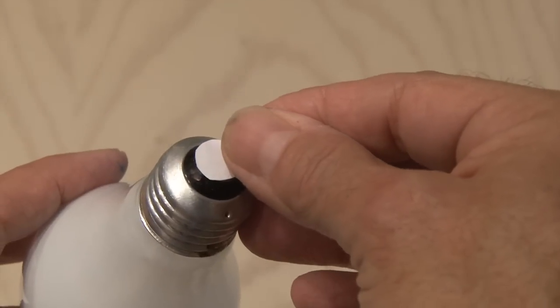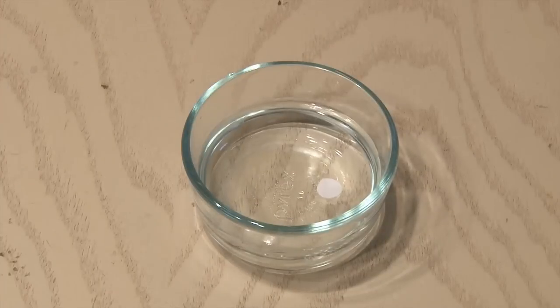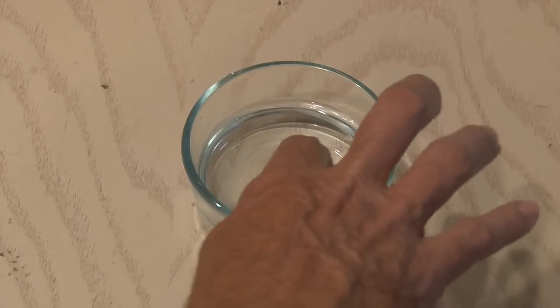Grab a piece of paper and a pair of scissors and cut out a very small dot. This dot should be about the size of the contact on the end of the light bulb. Then grab a little bowl of water and put the dot in the water. Leave it there for about 5 minutes. You want it to really soak up the water.